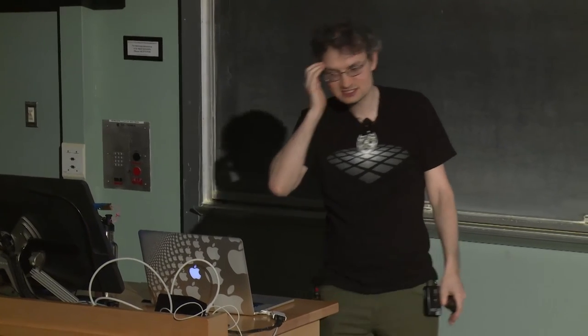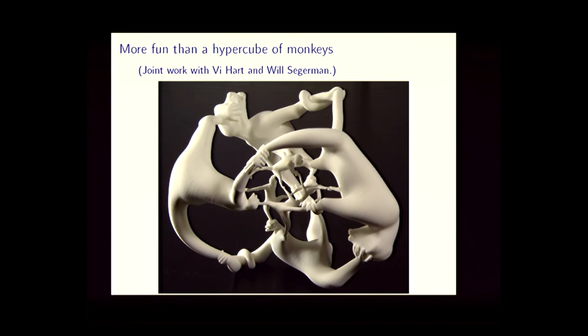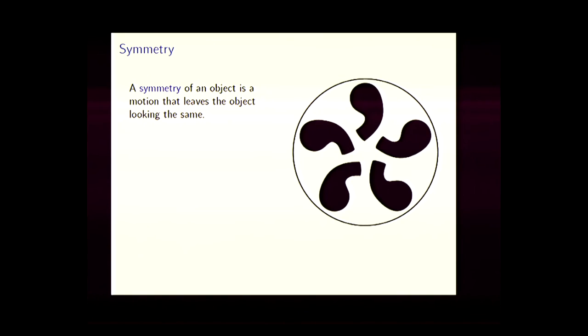Second project. This is joint work with Vi Hart, who many of you may know from YouTube, and my brother Will Segerman. It's called 'More Fun Than a Hypercube of Monkeys.' This is about a particular kind of symmetry that only exists in four dimensions. What is a symmetry? From the mathematical point of view, a symmetry is a motion of an object that leaves it looking the same after you're done.